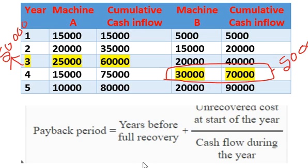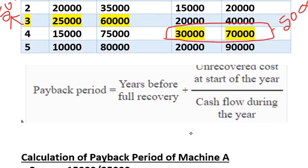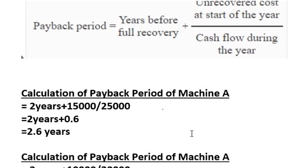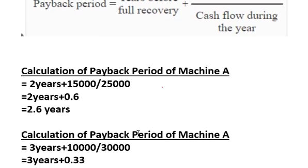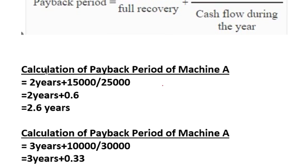The formula for payback period when cash inflows are uneven is: Payback Period = Year Before Full Recovery + (Unrecovered Amount of Investment / Cash Inflow During That Year). Using this formula we are going to calculate the payback period for Machine A.